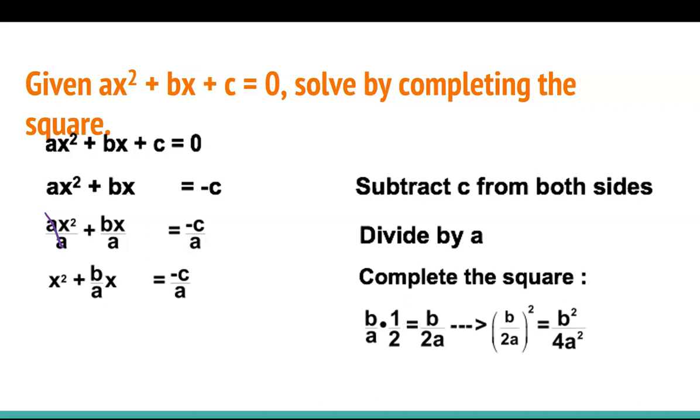Next, we're going to complete the square. So you know how we said we take the coefficient of x and we half it. So b times 1 is b, a times 2 is 2a. Then we square it. So we have b over 2a to the power of 2 is b squared over 4a squared. And we fill in the blanks with that value. So it looks super complicated, but it's technically just completing the square.